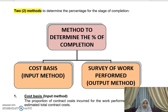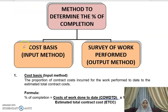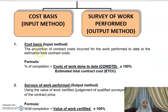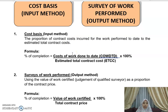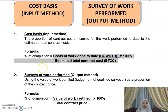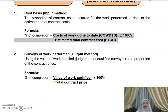For the input method — the cost basis — you take the proportion of contract costs incurred for work performed to date relative to the estimated total contract cost. The formula is: percentage of completion = cost of work done to date divided by estimated total contract cost. For the output method based on surveys of work performed, the percentage of completion = value of work certified divided by total contract price.